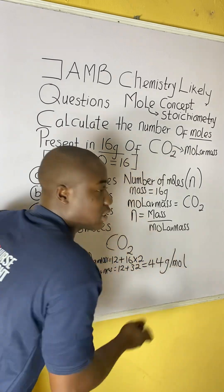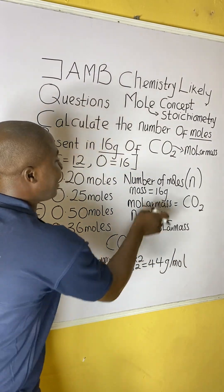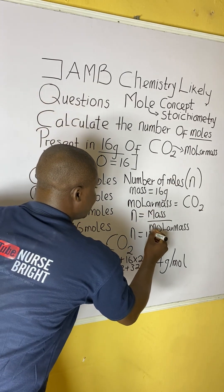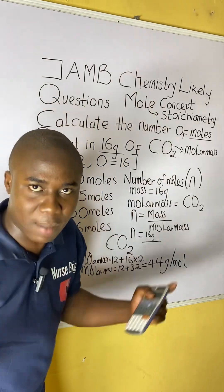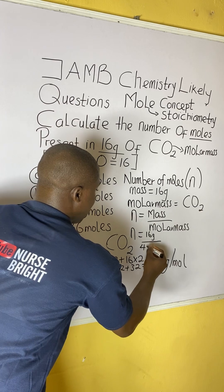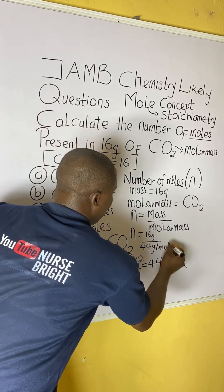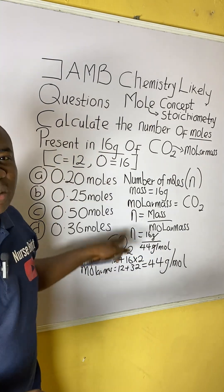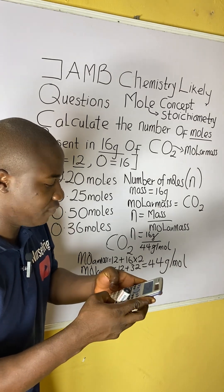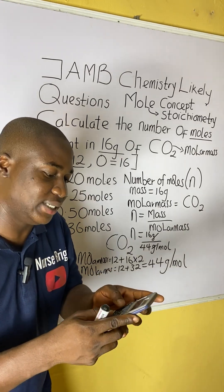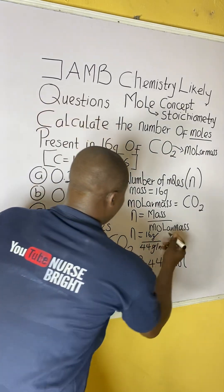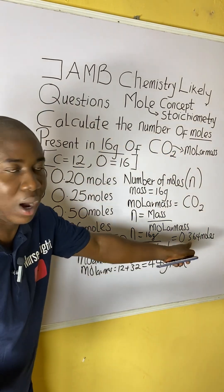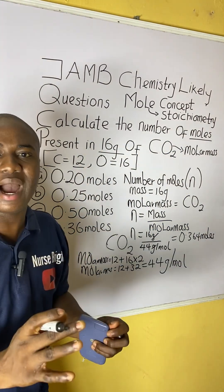Moving further, let's substitute everything into our formula. Mass is 16 grams, divided by the molar mass of CO₂ which is 44 grams per mole. Grams cancel grams, leaving just moles. So 16 divided by 44 equals 0.364 moles. Checking the answer options, this corresponds to option D. That's how questions like these are solved without stress.